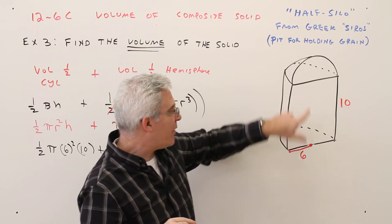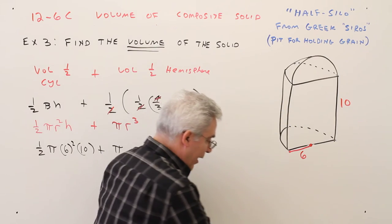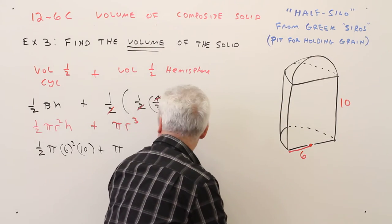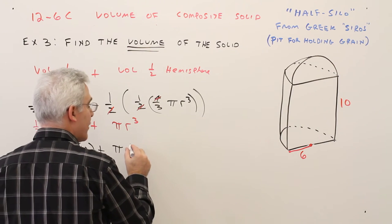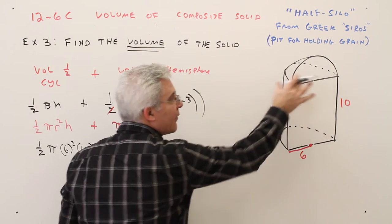The radius of the hemisphere is going to be the same as the radius of the cylinder if it fits directly on top. So it'll be plus pi times six cubed. Again, that's six and that's six.